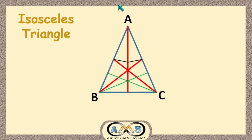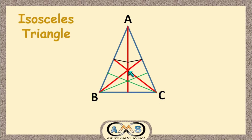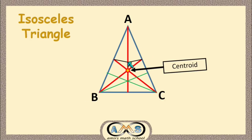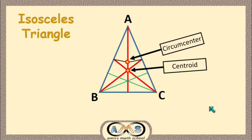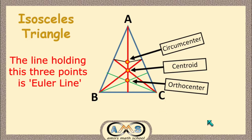Now let's see for the isosceles triangle. For triangle ABC, AB and BC are equal. The intersecting point of the three red lines, which are the medians, indicates the centroid. The black lines are perpendiculars on the midpoints of the three sides, so this point is also the circumcenter for triangle ABC. The two green lines and the red line — the green line is perpendicular on AB from C, the other green line is perpendicular on AC from B, and the red line is perpendicular on BC from A — intersect at a point which is the orthocenter. For the isosceles triangle, these three points lie on the same line.